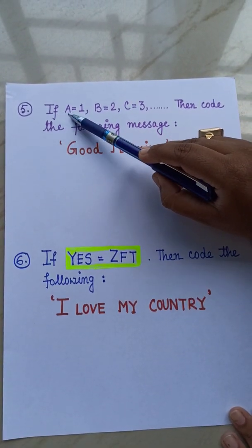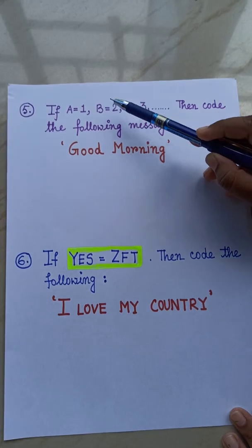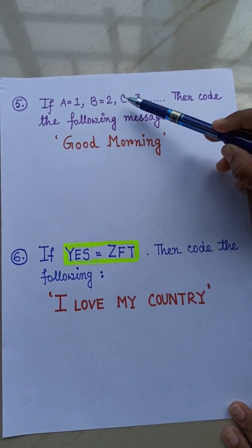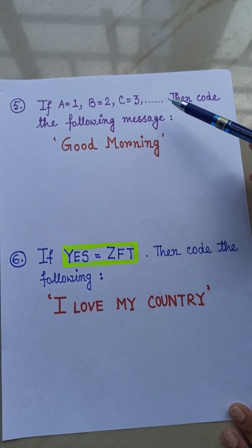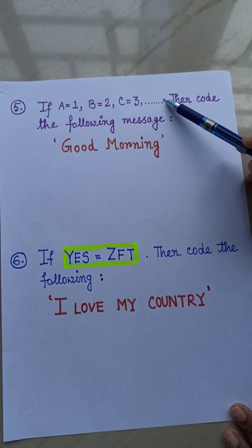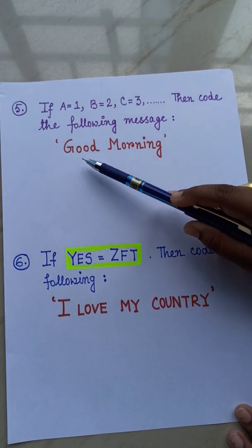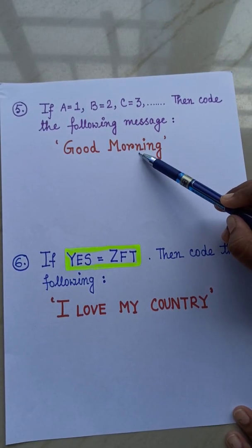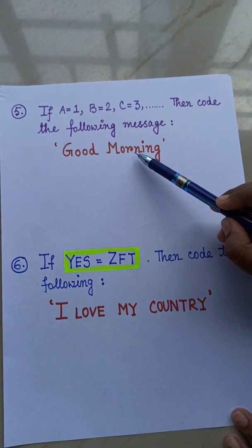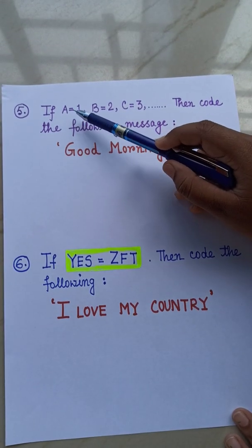So in the first one, in the fifth one, if A equals to 1, B equals to 2, C equals to 3. Then, if it continues in this way, then code the following message. The message is, good morning.